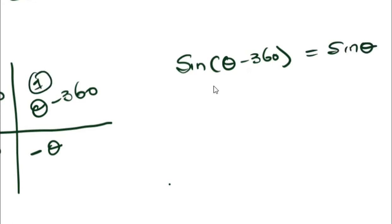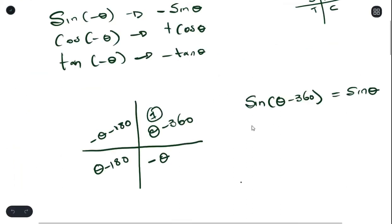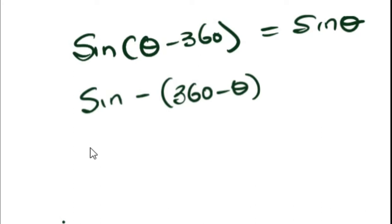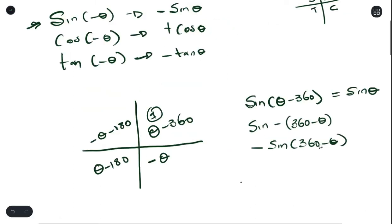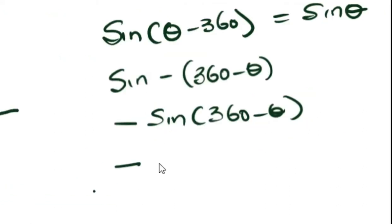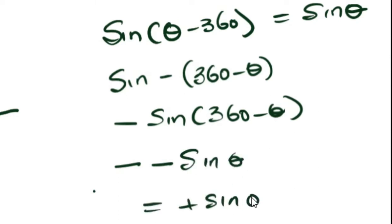Another way to do this, if you want to go through the longer steps, you can bring out a negative from your identity. So you have sine of negative theta, which is negative sine theta. This gives negative sine of (360 minus theta), and since 360 minus theta is in the fourth quadrant of your positive quadrant, this becomes negative negative sine theta, which is positive sine theta.